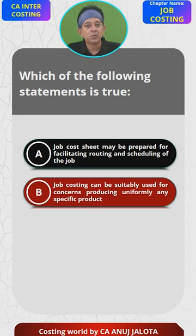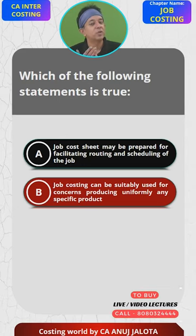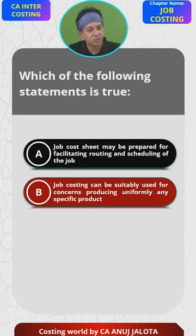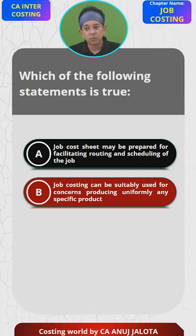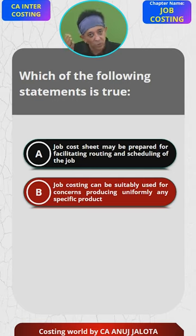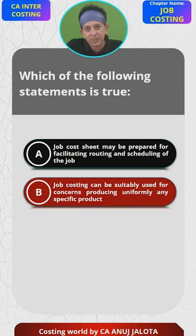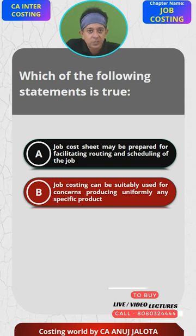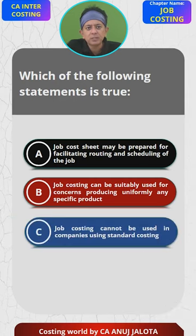For example, an interior designer for whom each and every project is different, or a carpenter for whom all the furniture made is unique — those are the applications of job costing. So option A cannot be the answer and option B cannot be the answer.